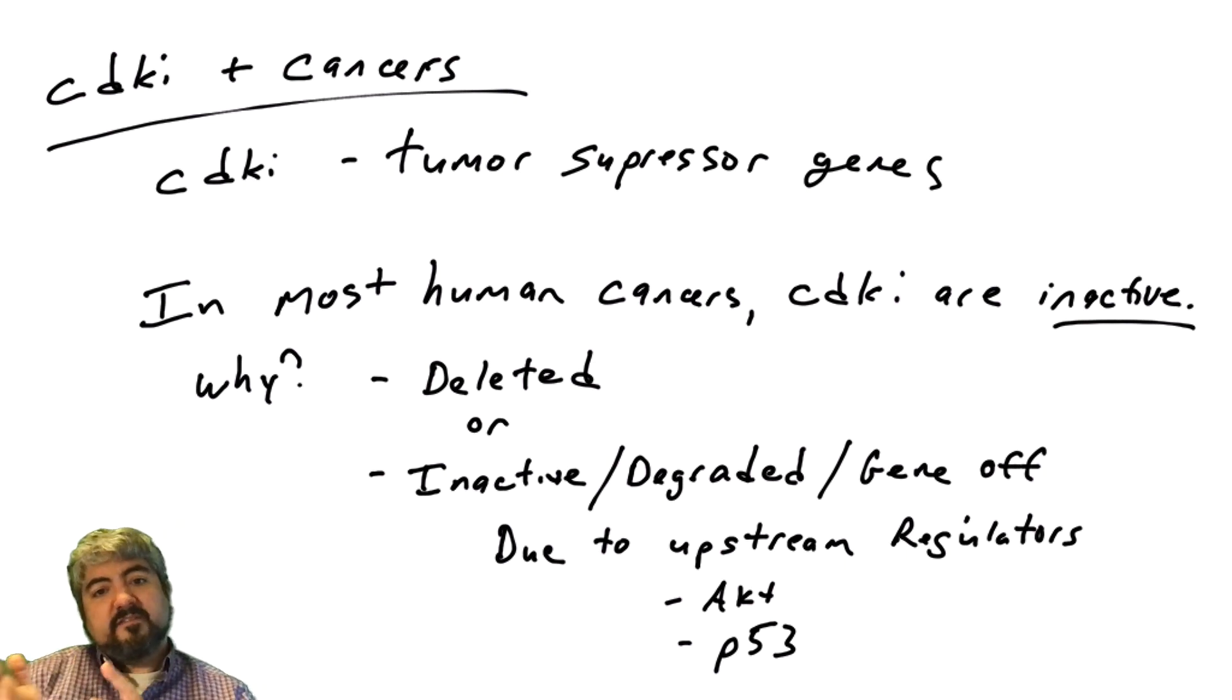So mutations in P53, mutations in the AKT pathway, all of those could lead to CDK inhibitors either not being produced at the gene level, being destroyed at the post-translational level, being inactive by being moved into the cytoplasm. So in many human cancers, they could produce CDKi proteins just fine, but they don't. Or if they're produced, they're destroyed. Or if they're produced, they're in the cytoplasm.